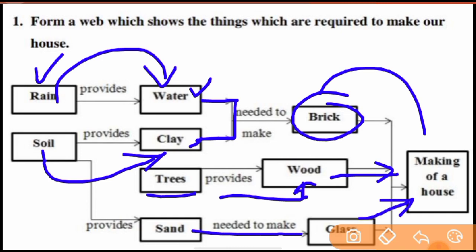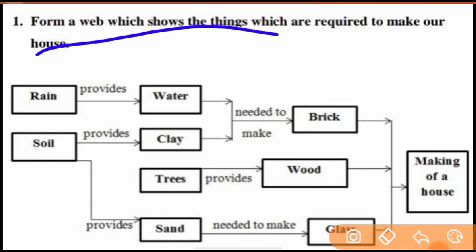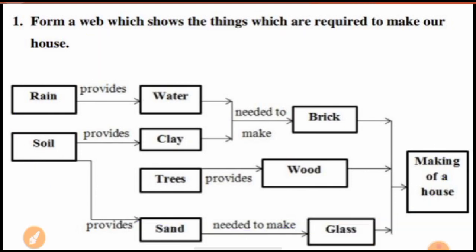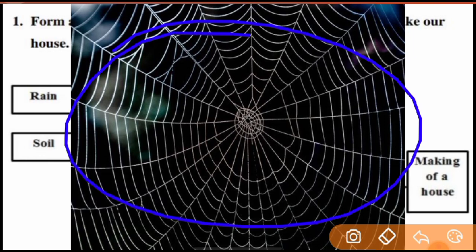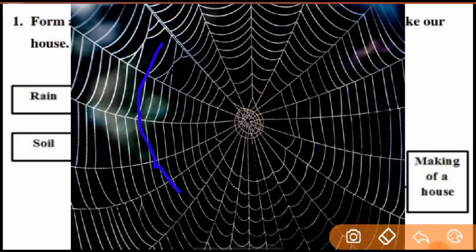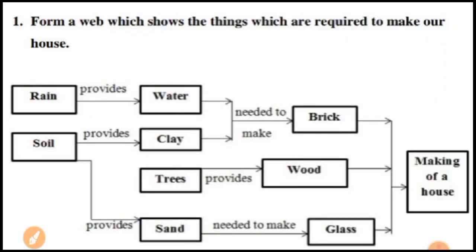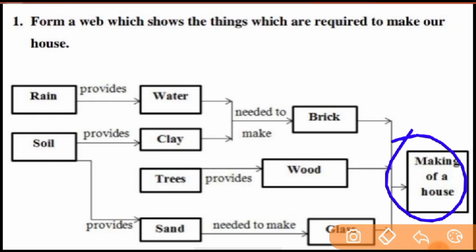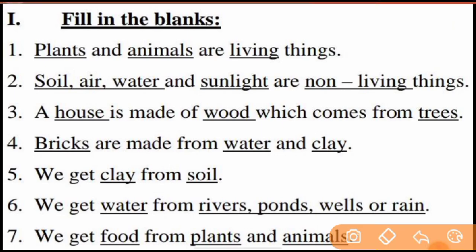To make a house we need bricks, we need wood, and soil also provides sand. Glass is also necessary to make a house. They are all linked to one another — this is a wave for making a house, a simple example of a wave. You can draw this in your notebook.